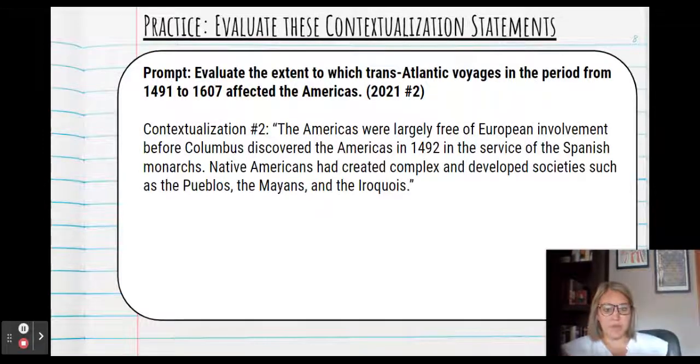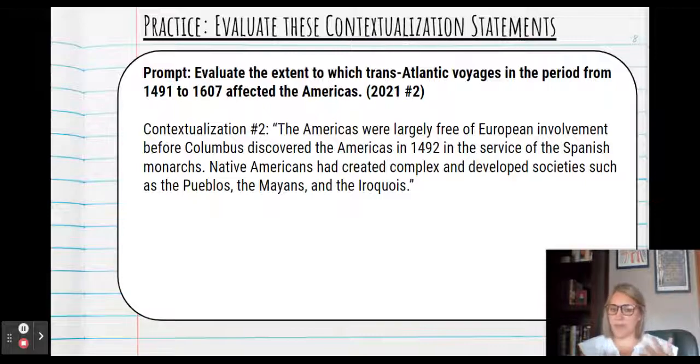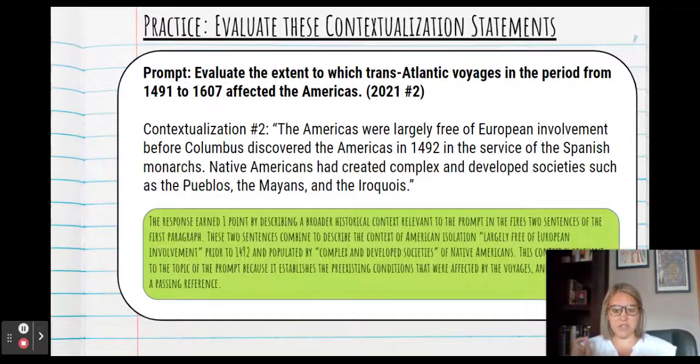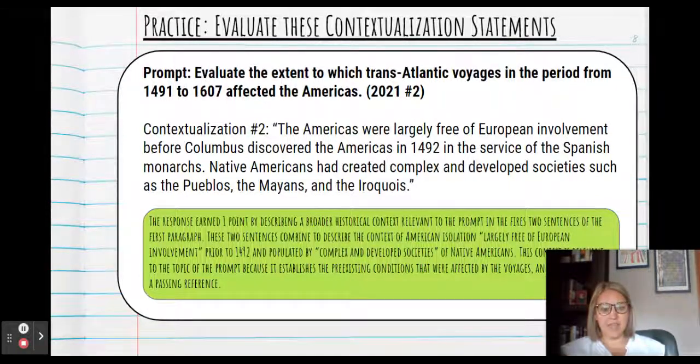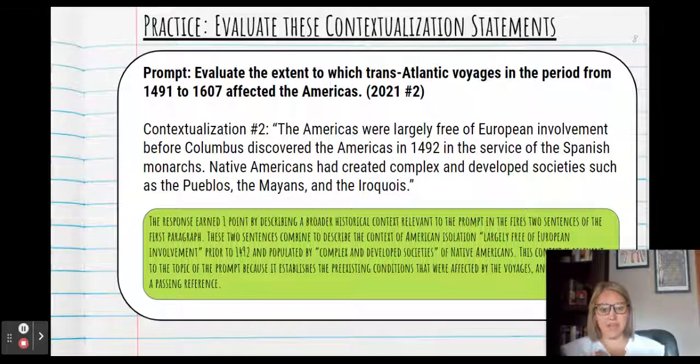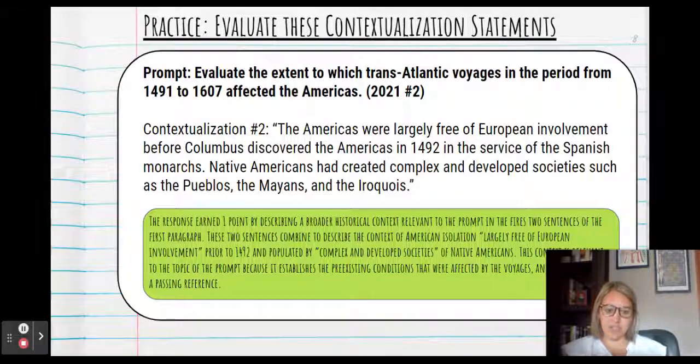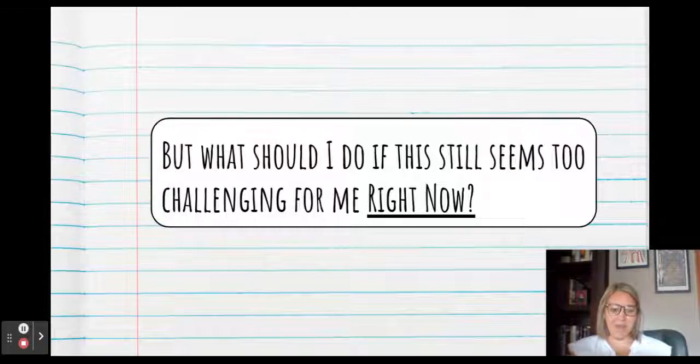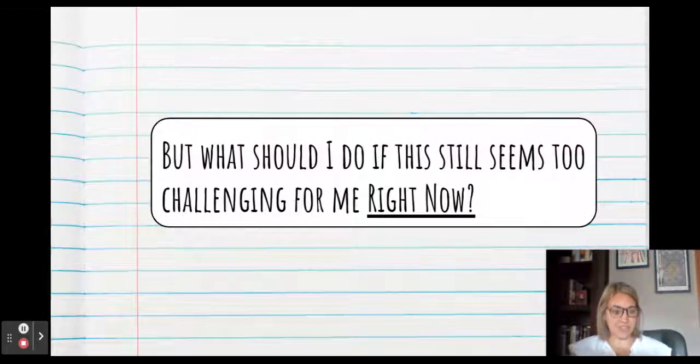Let's look at another one. The Americas were largely free of European involvement before Columbus discovered the Americas in 1492 in the service of the Spanish monarchs. Native Americans had created complex and developed societies such as the Pueblos, the Mayans and the Iroquois. So what do you think? Does this one give a broader context, time and place? Does it have some specific examples? The College Board determined, yes, it does earn one point. In the first two sentences of the paragraph, these two sentences combine to describe the context of American isolation, largely free of European involvement, and it describes the complex and developed societies. It is relevant to the prompt because it establishes the pre-existing conditions that were affected by the voyages and weren't just a passing reference.